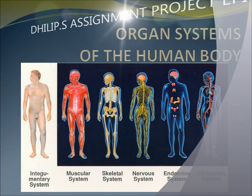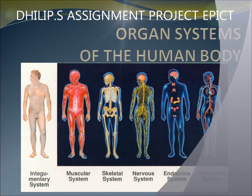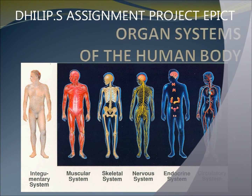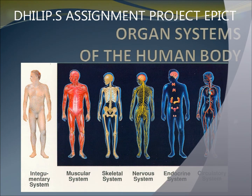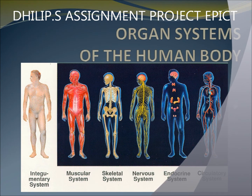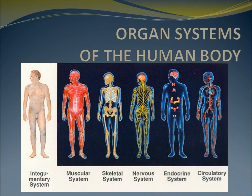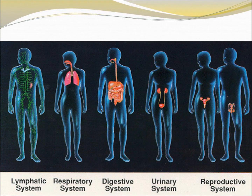Systems of the human body: integumentary system, muscular system, skeletal system, nervous system, endocrine system, circulatory system, lymphatic system, respiratory system, digestive system, urinary system, reproductive system.